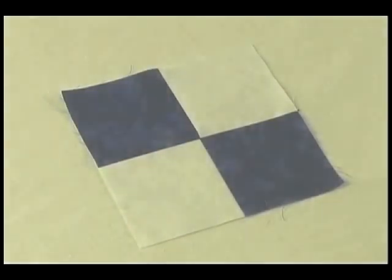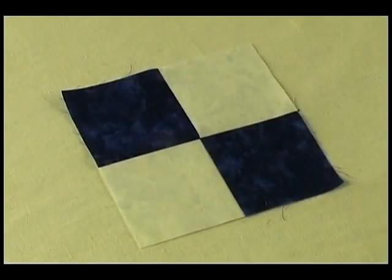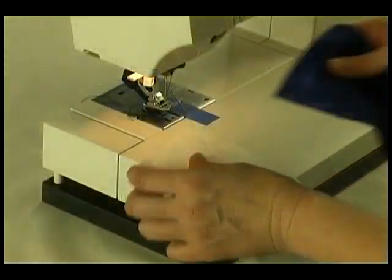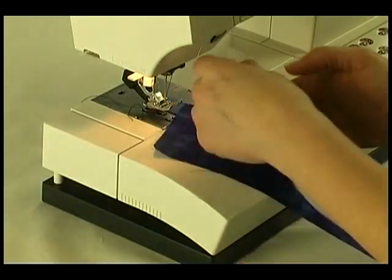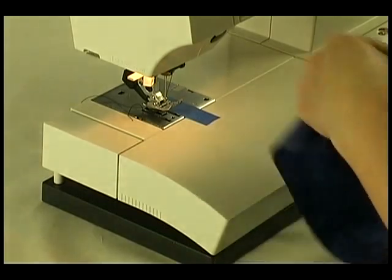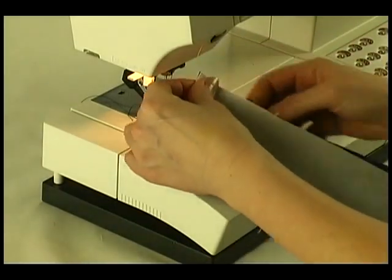A four-patch is one of the most basic blocks and is made up of four equal-sized squares in two colors. Use strip piecing when making four-patch blocks. Cut a three and a half inch wide strip from one light and one dark fabric.